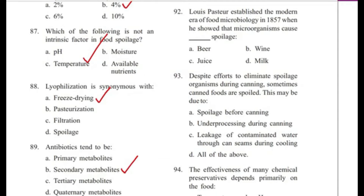Question 92: Louis Pasteur established the modern era of food microbiology in 1857, when he showed that microorganisms cause spoilage of — beer, wine, juice, or milk? Answer is D, milk.